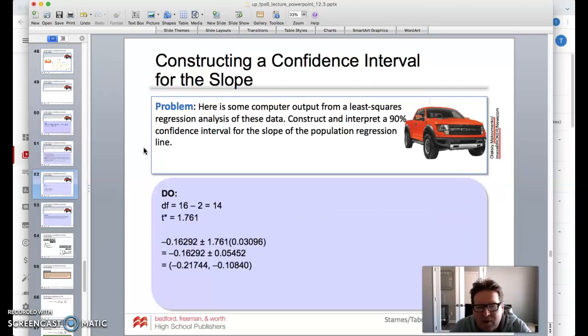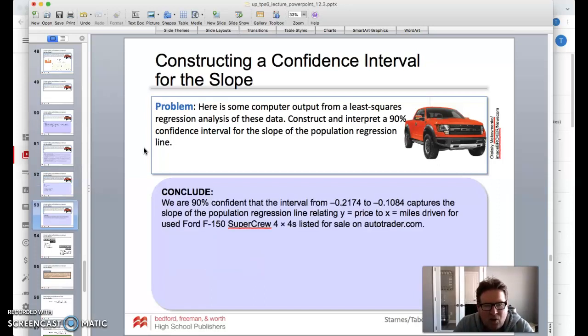Let's do the do. The degrees of freedom would be 14. We got our T value of 1.761. If we plot those in there, we would see that our confidence interval would be as shown. I'll talk through the calculator part. Make sure that you're showing what you're putting in the calculator and what you're getting out of the calculator.